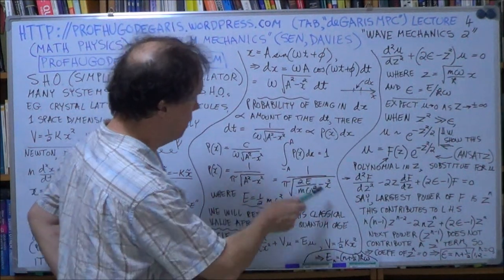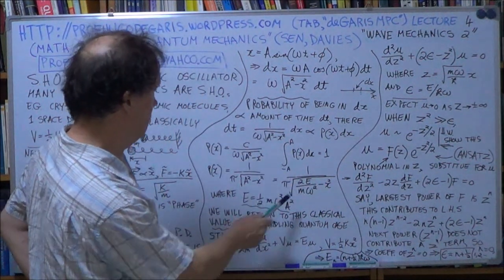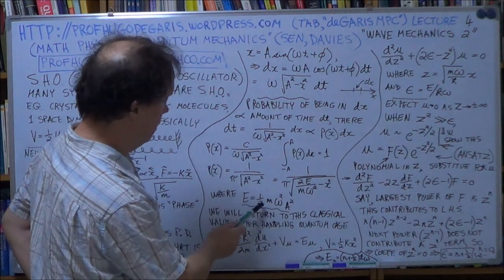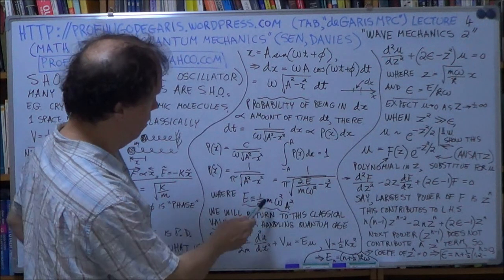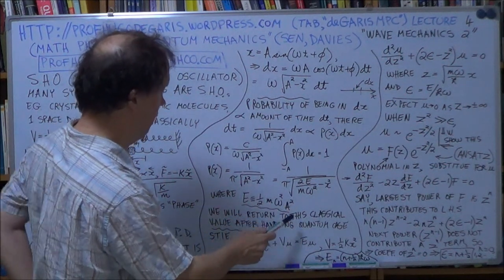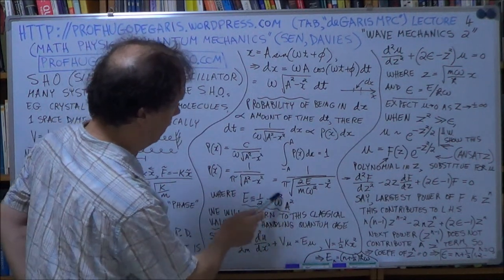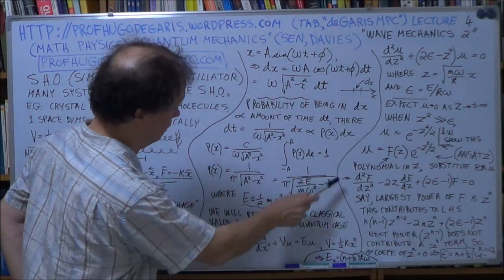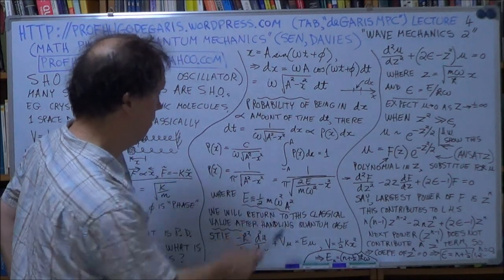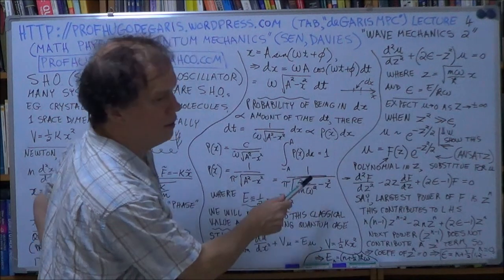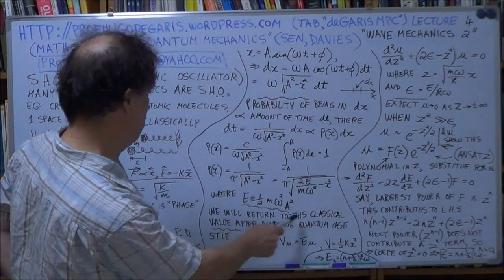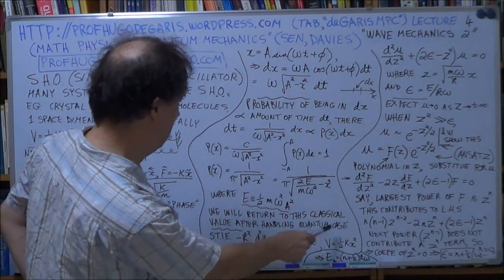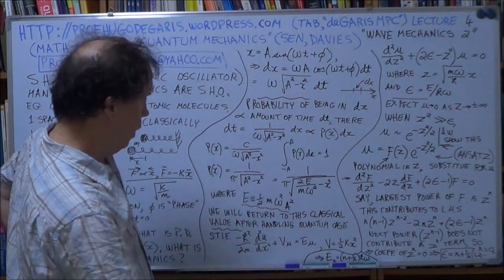And so it's just a simple substitution. We're just saying this E here is by definition. This E here is a half m omega squared a squared. Now if you plug that into here, this will simplify to this. But we put it in this form because it's similar to what we will get in the quantum case. So you know, we'll return to this classical value after handling the quantum case.